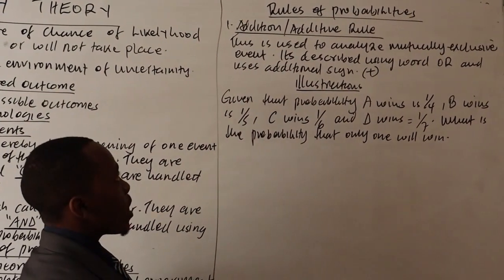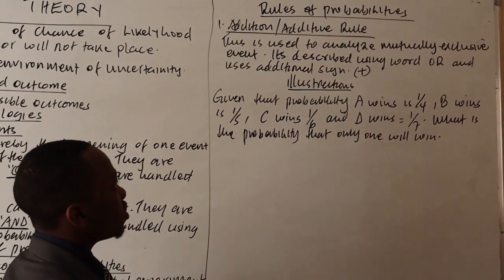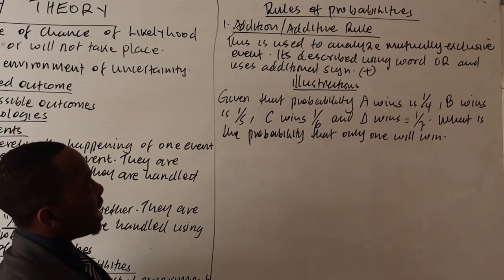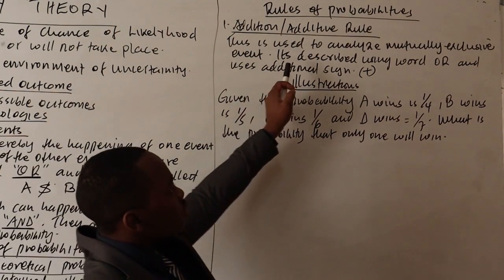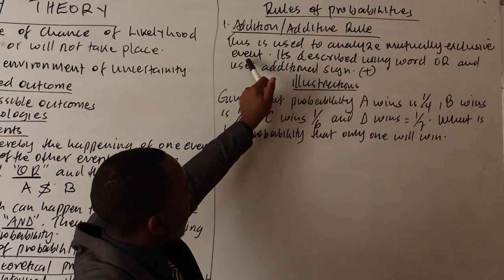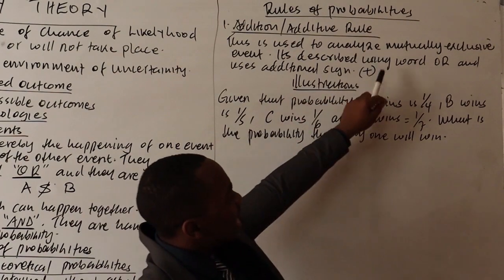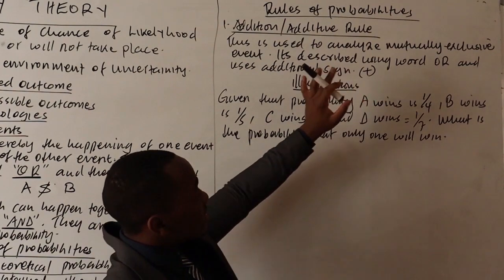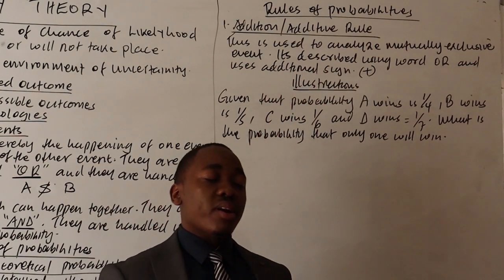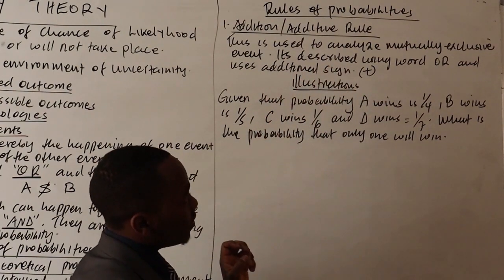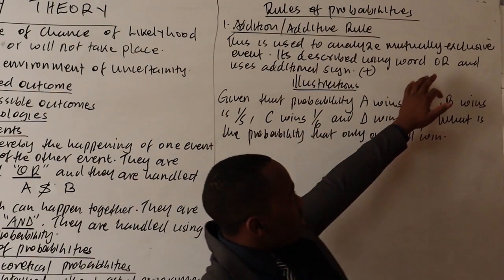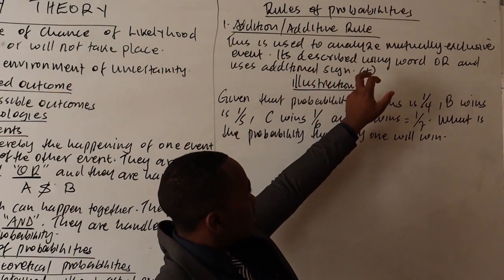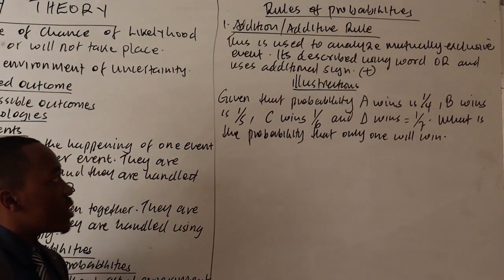The first law is the addition or additive rule. The additive rule is used to analyze mutually exclusive events. It is described using the word 'or' and uses the addition sign. The additional rule is only applicable when analyzing mutually exclusive events.